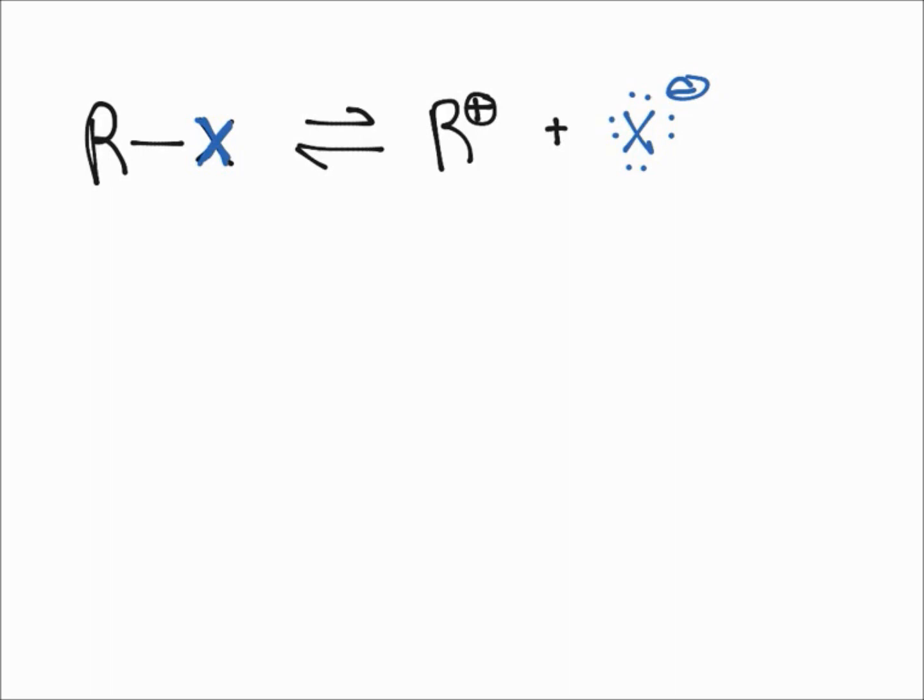And so let's think about it a little bit. How can we get this carbocation to be more likely to form, to essentially push the equilibrium to the right side?